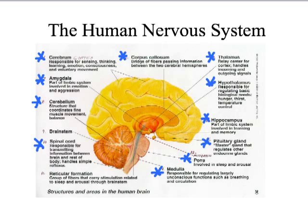Looking at the brain with part names and their functions: the cerebrum is the big outer area for sensing, thinking, learning, emotion, and voluntary movements. The amygdala is a tiny part that is part of the limbic system — responsible for basic survival and involved in emotion and aggression. The cerebellum coordinates your fine muscle movements and gives you balance. The spinal cord is responsible for transmitting information between the brain and the rest of the body, and it handles simple reflexes — not all sensory inputs go to the brain; some reflexes happen within just the spinal cord itself.